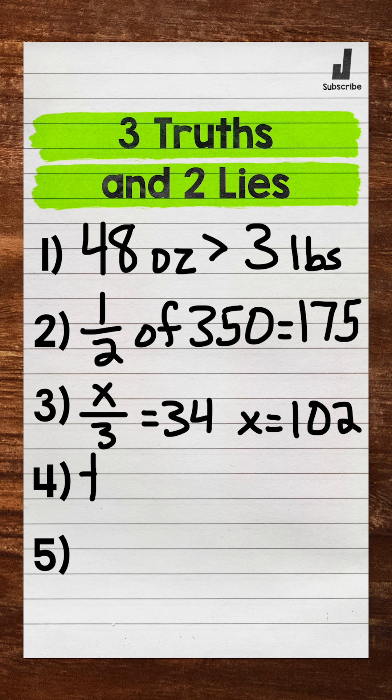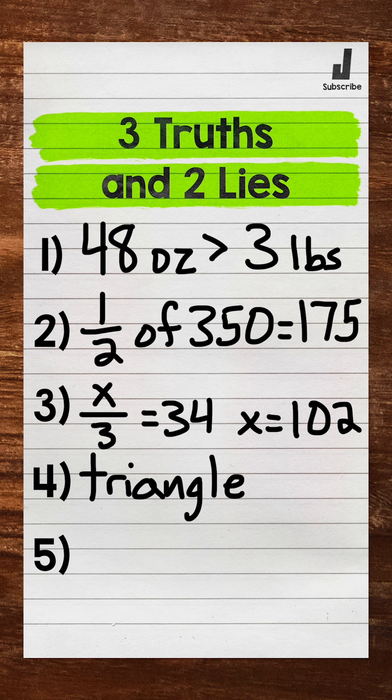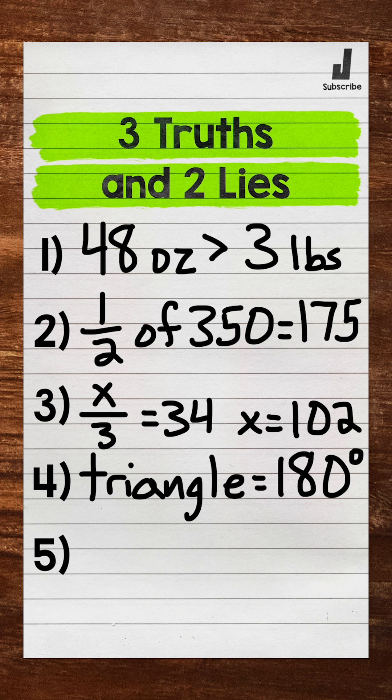For number four, we have the sum of the angles for any triangle equals 180 degrees. That means when you add up the angles of a triangle, they are always going to equal 180 degrees.